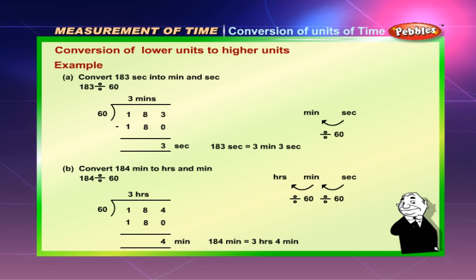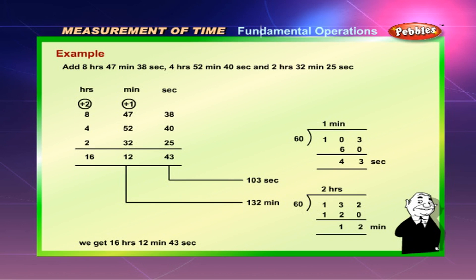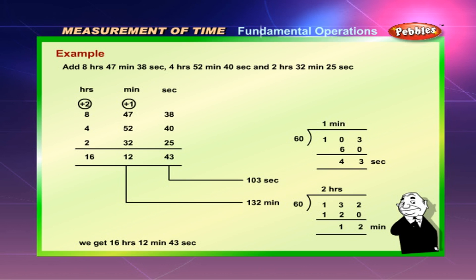Fundamental operations. Example: Add 8 hours 47 minutes 38 seconds, 4 hours 52 minutes 40 seconds, and 2 hours 32 minutes 25 seconds. On addition, we get 16 hours 12 minutes and 43 seconds.